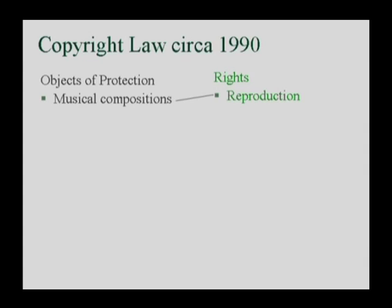First is an exclusive right to reproduce the composition. So the holder of the copyright — in the first instance, that's the composer — has an exclusive right to reproduce it in, for example, sheet music format or in mechanical copies: tapes, records, CDs, and so forth.